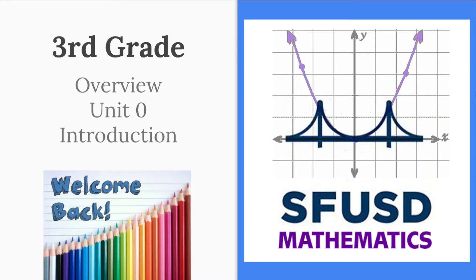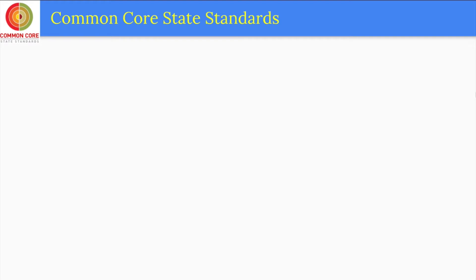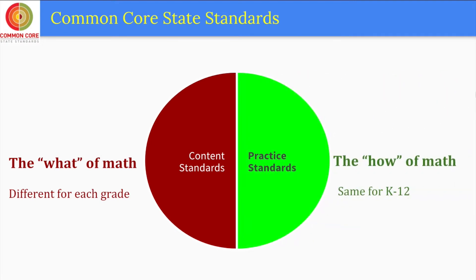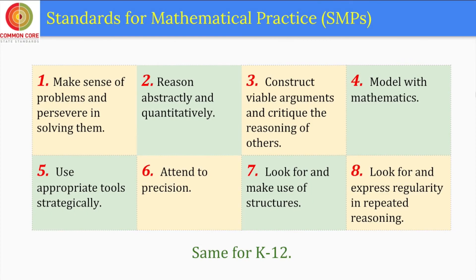As you may know, the Common Core State Standards for math include content standards — what we learn, which is different in each grade — and practice standards — how we learn, which is the same in each grade. The eight standards for math practice are the same, kindergarten through Algebra 2, and they describe the habits of mind of mathematicians.